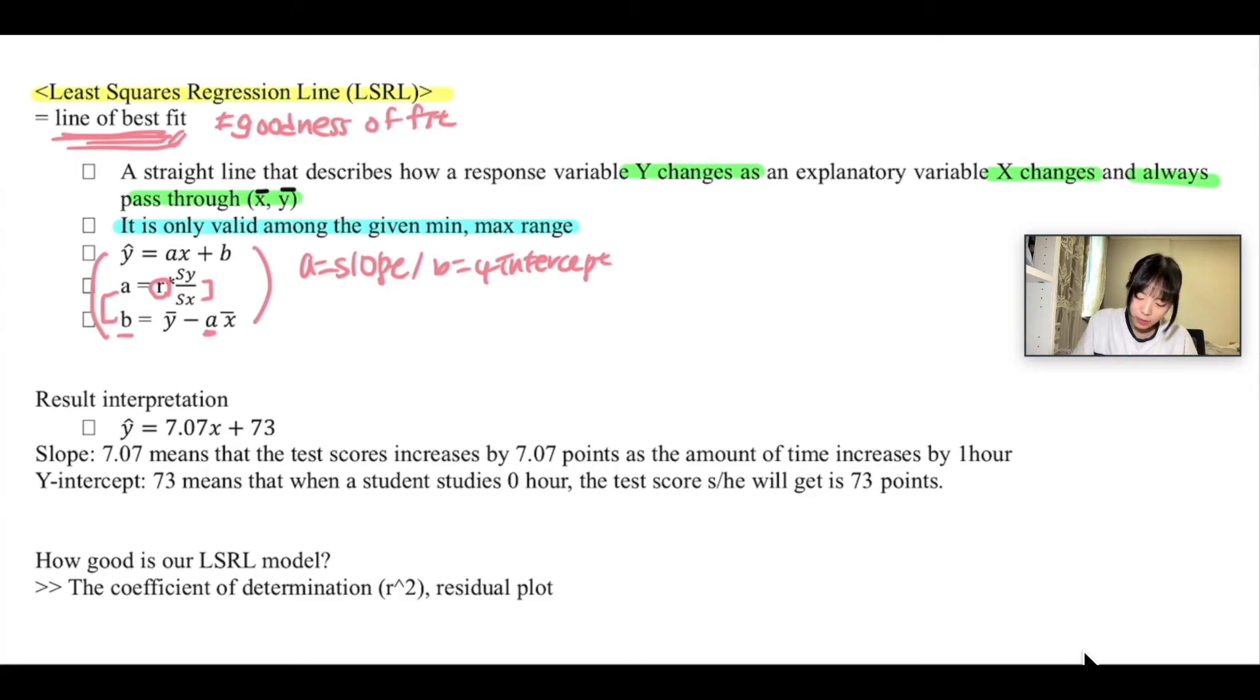We're going to look at how to interpret the results. Let's say there is a question where you have this model: ŷ = 7.07x + 73, where this is the slope and this is the y-intercept. The x is the time students spent studying for their exam, and y is the score they received.